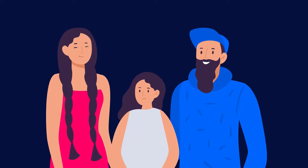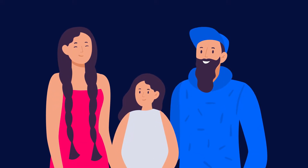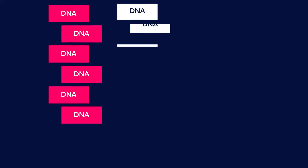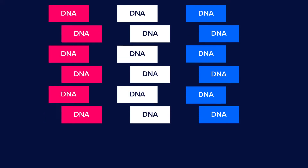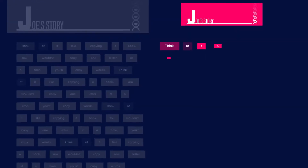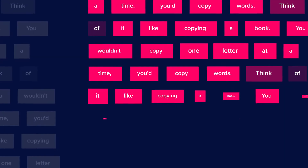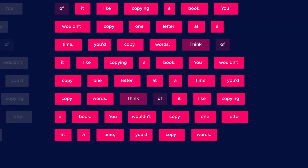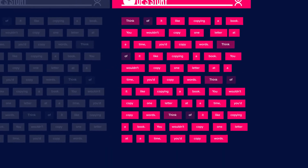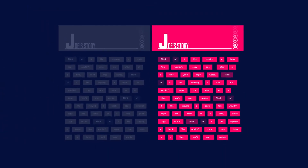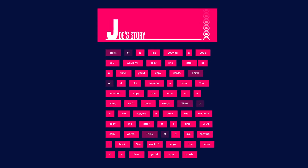How is that possible? You inherit your genes from your mother and your father. This DNA is passed down in chunks. Think of it like copying a book — you wouldn't copy one letter at a time, you'd copy words. This is why imputation can work.